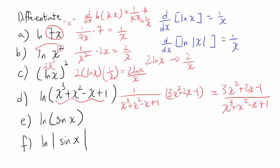Now let's look at part e: natural log of sin of x. Think of sin(x) as being our u. So you have 1 over sin(x), and now you multiply by the derivative of sin(x), which is cosine of x. That gives you cosine(x) over sin(x), which is cotangent of x.